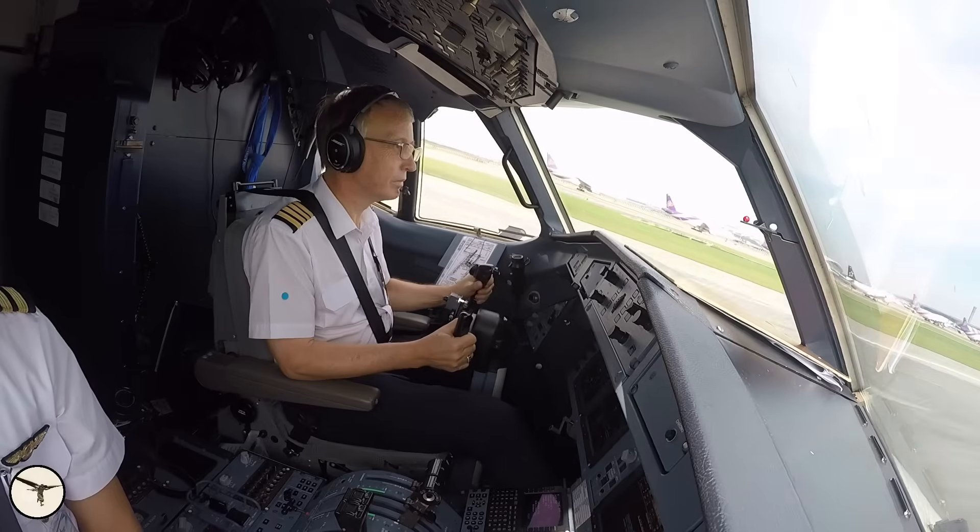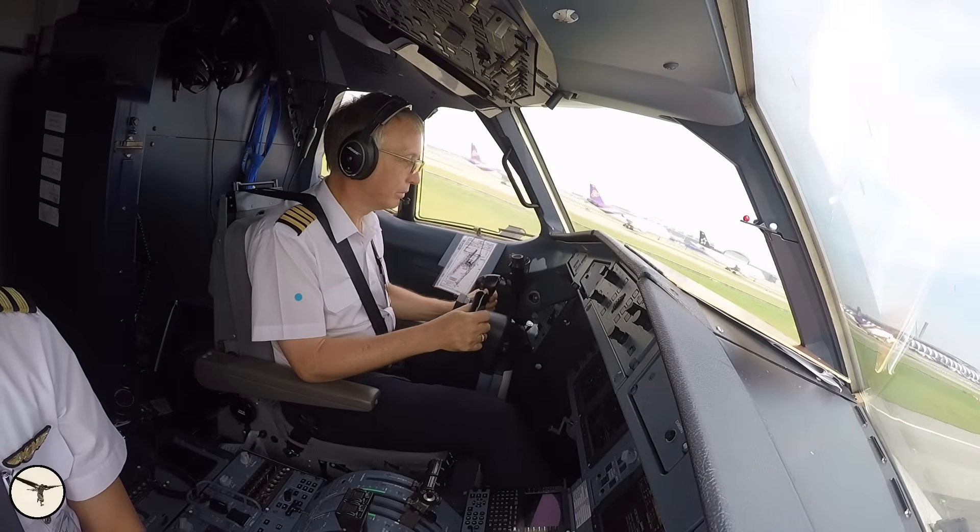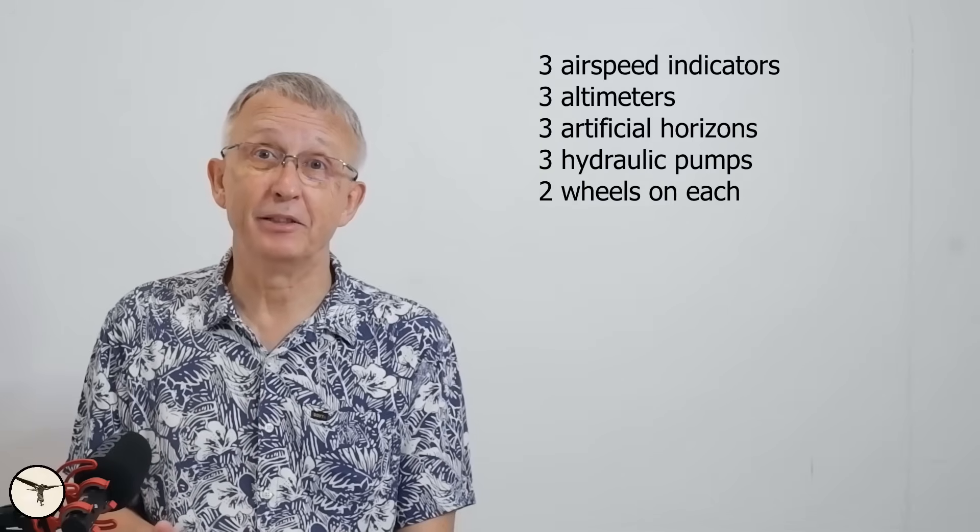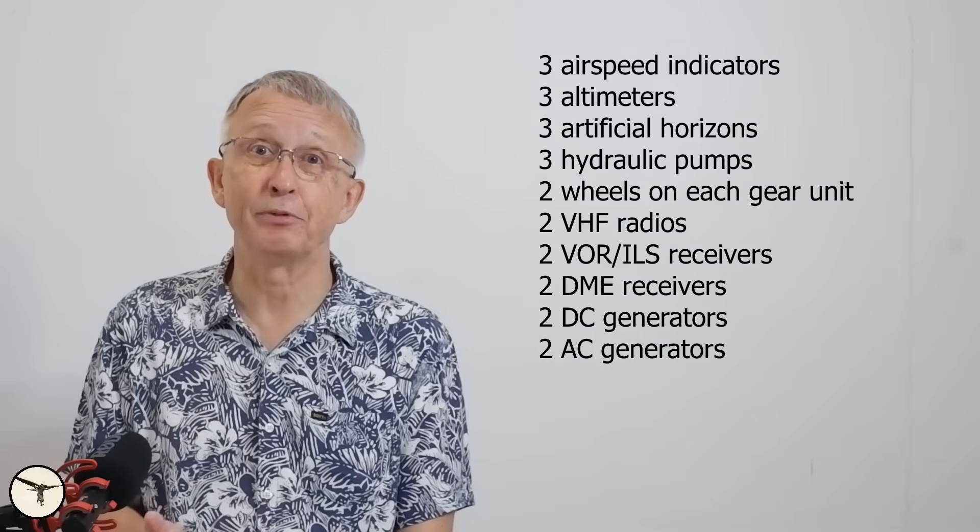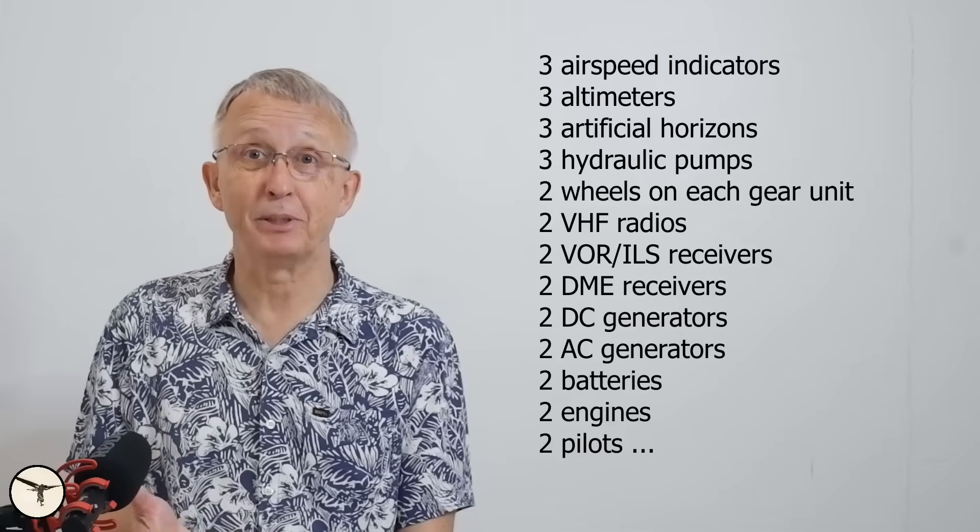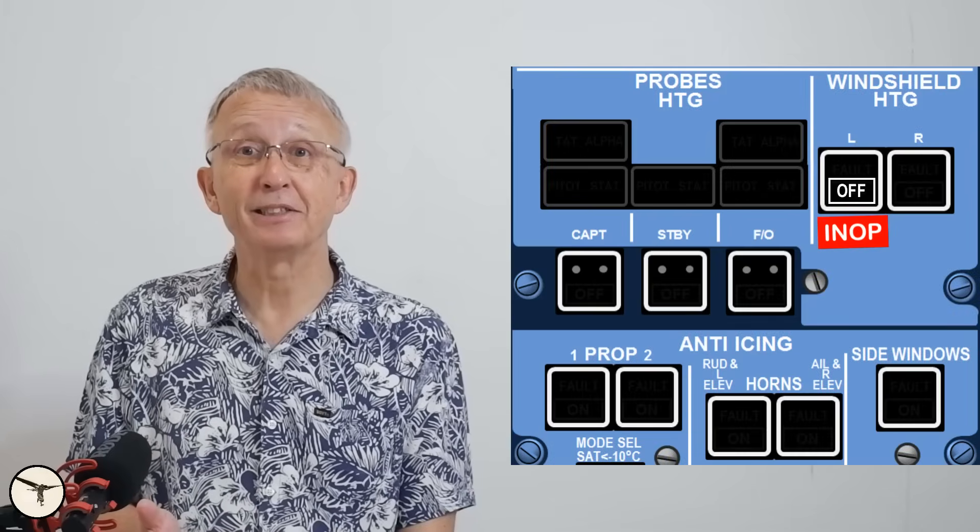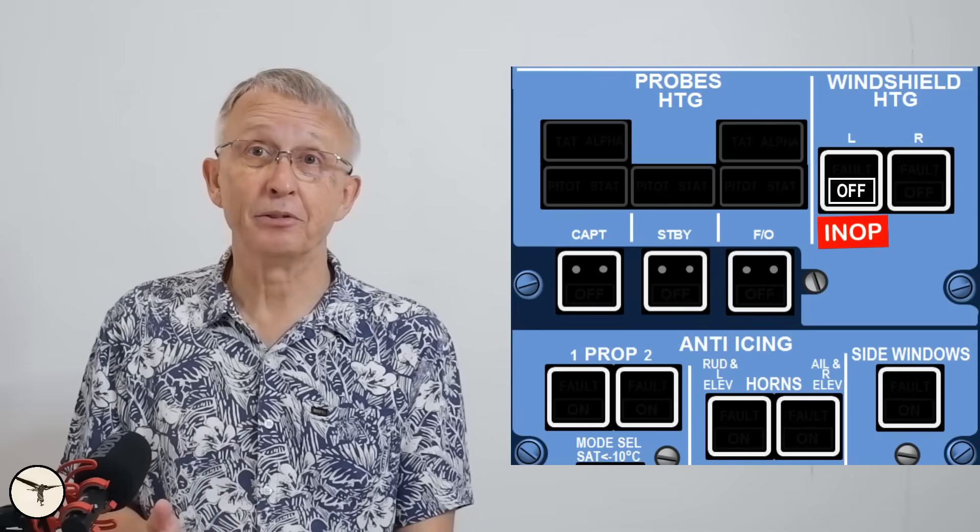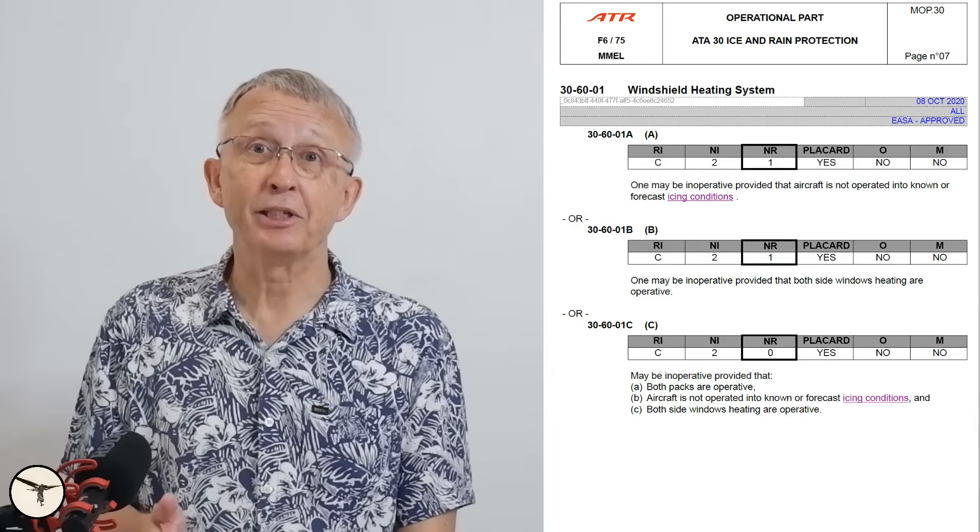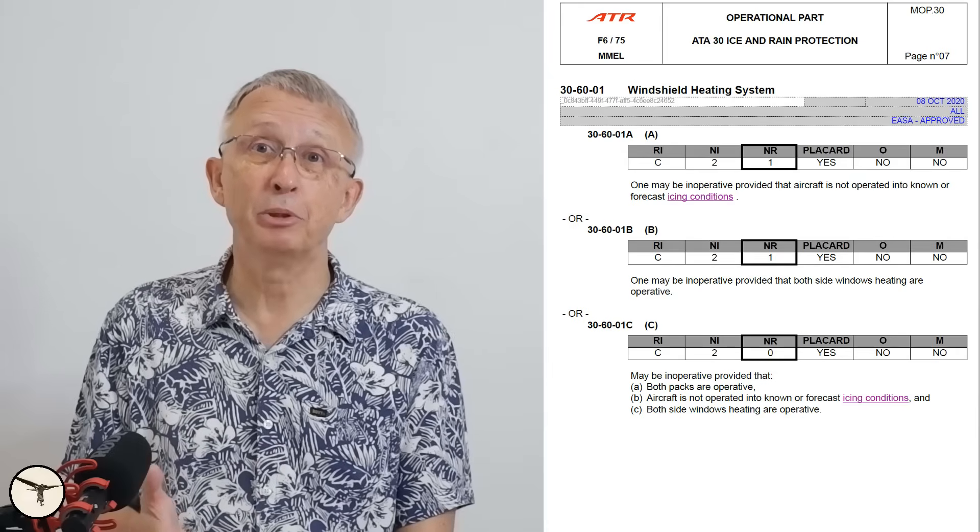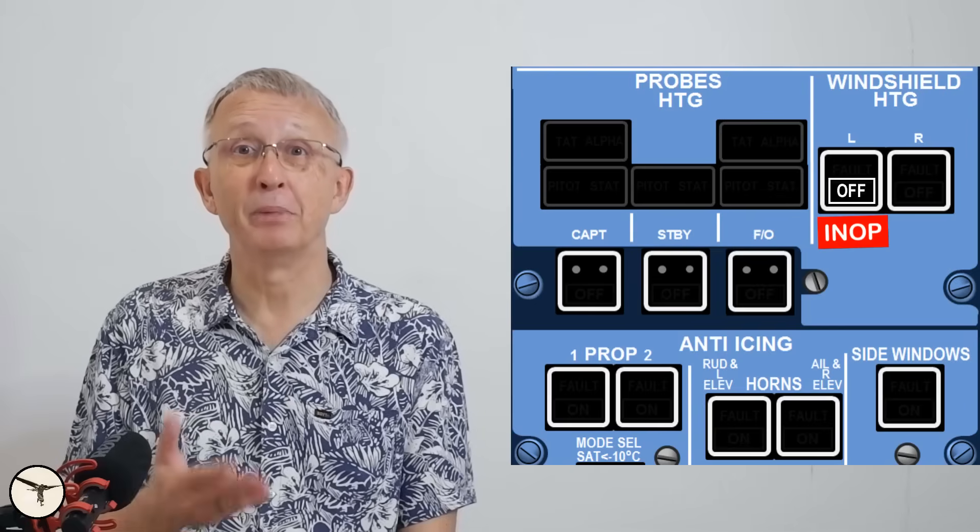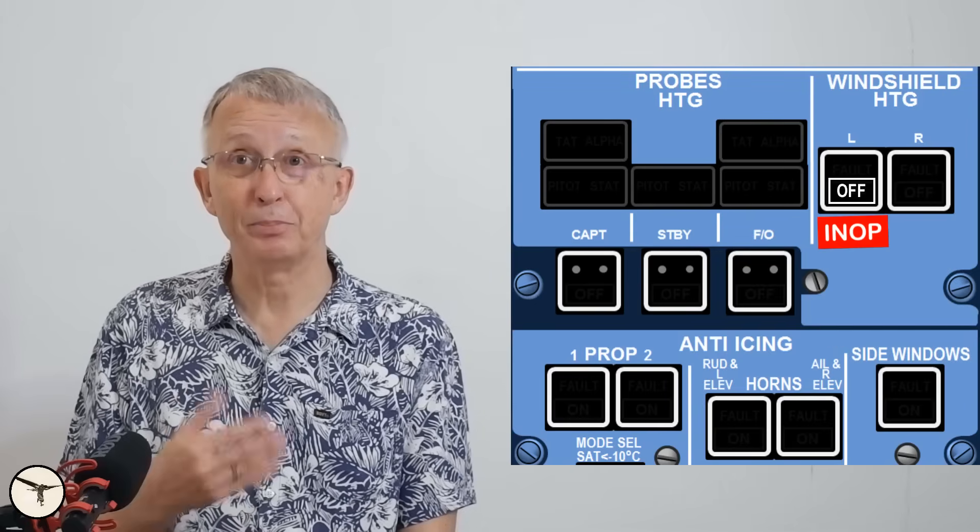There is one exception to the dark cockpit concept, when we dispatch the aircraft with a non-defect. Modern airliners are built with extensive redundancy, allowing us to operate with some systems inoperative for a limited time and under specific conditions. For instance, if an ice protection system is not working, we cannot fly in icing conditions. These conditions are outlined in a manual called the minimum equipment list, MEL. As a result, we may take off with a white or amber light in the cockpit. But that is briefed.